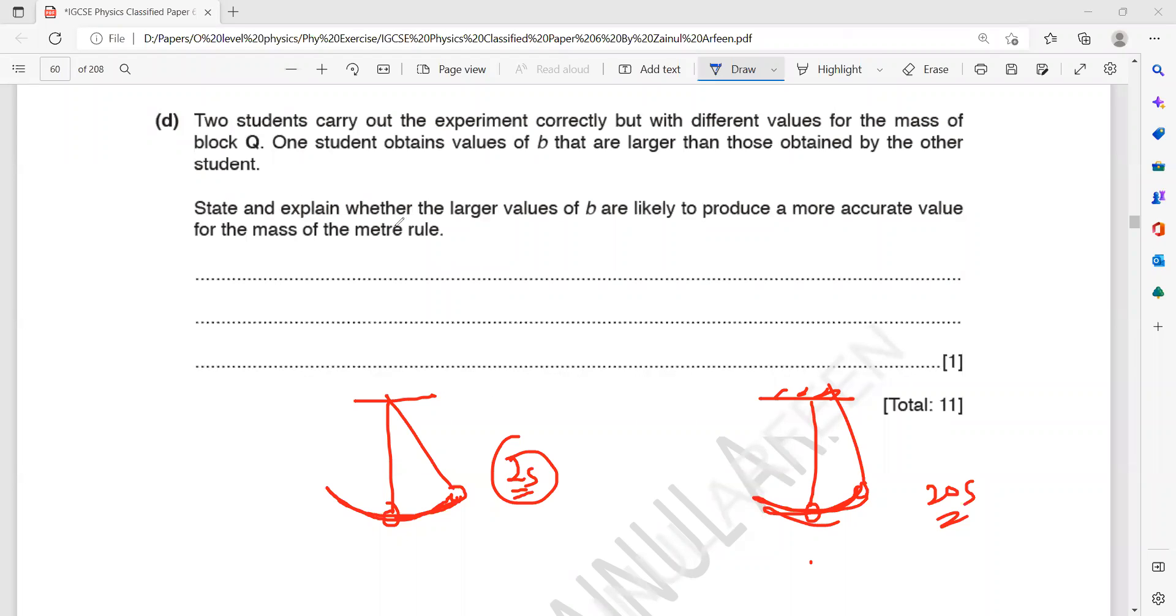So as a result, the percentage uncertainty will be high. So if we say that two students carried out the experiment and a student uses a larger value of B, so his results will be more accurate. And whenever you use a large value, it will be more accurate because the percentage uncertainty will be lower.